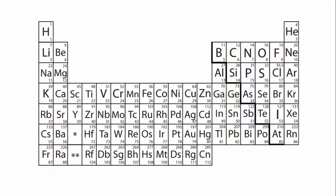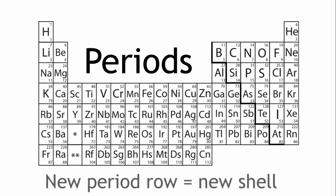The rows going across from left to right are periods. Elements in the same period all share something in common. They have the same number of energy shells. Each new period row represents a new shell.